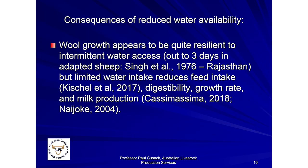More recent studies from 2017–2018 found that limited water intake reduces feed intake — no surprise given the intensive systems data — but also reduces digestibility and growth rate of animals, as well as milk production. Milk production is obvious because milk has a large proportion of water. The interesting finding is that not only feed intake but also digestibility was reduced, relating to water's importance as a medium in the rumen for mixing and microbial operation in breaking down fibrous particles.